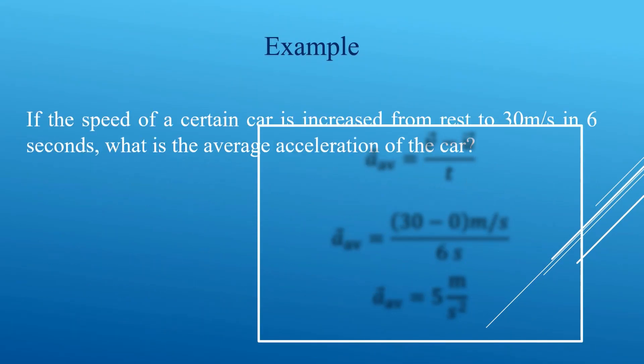If the speed of a certain car is increased from some initial rate to 30 meters per second in 6 seconds, what is the average acceleration of the car?